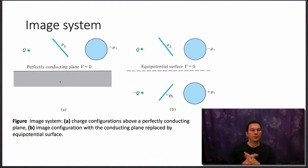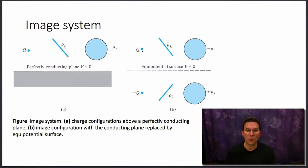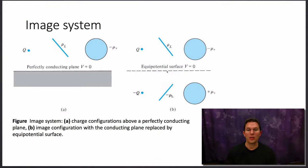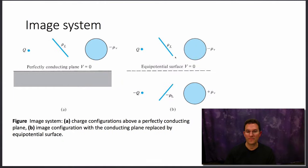What image theory tells you is that you can replace this system with this equivalent system. What we've done is reflected each charge distribution about the plane Z equals zero. That's the first thing you have to do — reflect the charge distribution about the surface of the conductor — and then change the sign of the charge distribution. So plus Q becomes minus Q, positive rho-L becomes minus rho-L, and negative rho-V becomes plus rho-V.